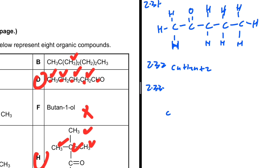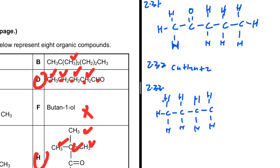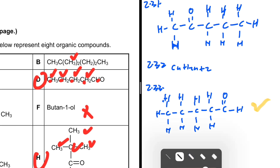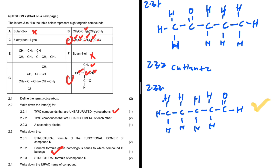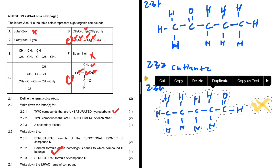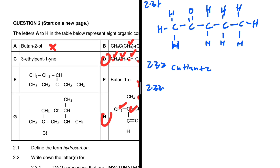Question 2.3.3: structural formula of compound C. Starting the working — carbon one with three hydrogens, carbon two with two hydrogens, carbon three with two hydrogens, carbon four with two hydrogens, carbon five with one hydrogen. Wait — this is actually compound D, not C. It's always important to double-check.